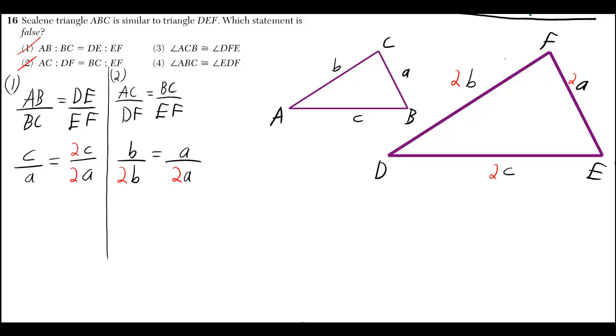In choice one, they said, is the ratio of AB to BC equal to the ratio of DE to EF? You can write that as AB over BC equals DE over EF. Then I labeled the sides A, B, and C. The side that I labeled A was across from angle A, the side labeled B was across from angle B, and the side labeled C was across from angle C.